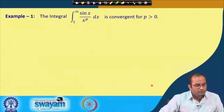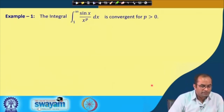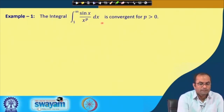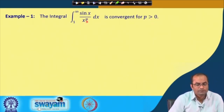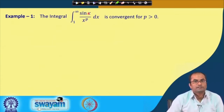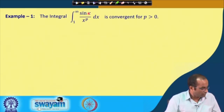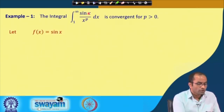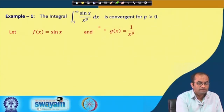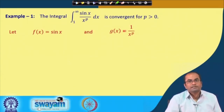Let us go through an example where we can use this result easily. We want to prove that the integral from 1 to infinity of sin(x) / x^p is convergent for p greater than or equal to 0. We will show this with the help of the Dirichlet test. In this case, let f(x) = sin(x) and g(x) = 1 / x^p.